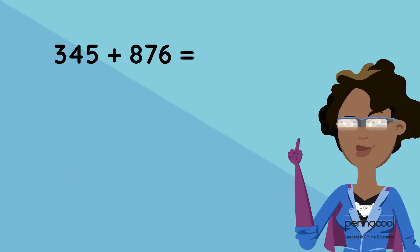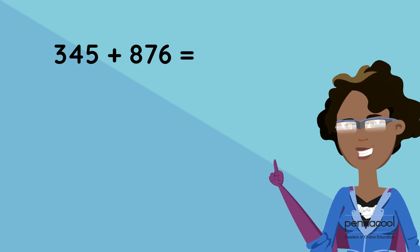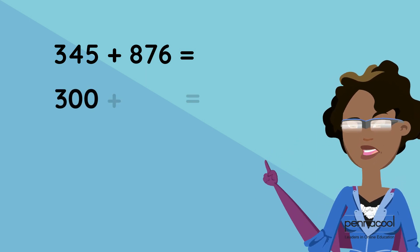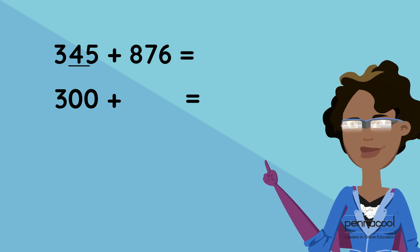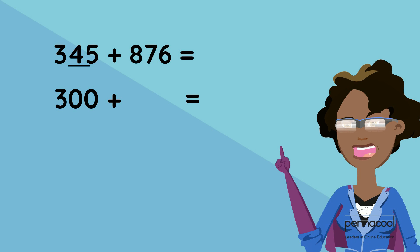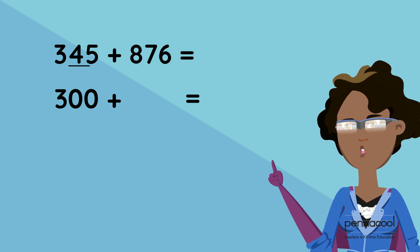Step one would be to round each number to the nearest hundred. 345 to the nearest hundred would be 300. When we round we look at the number in the tens column. Since this is less than five we change the numbers in the tens and ones columns to zeros.